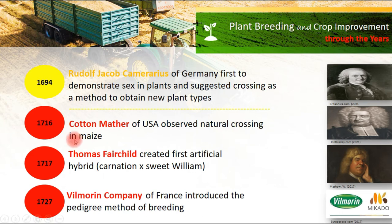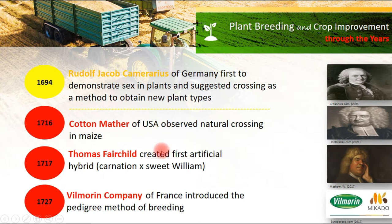Cotton Mather in 1716, from the USA, observed natural crossing in maize. Also, Thomas Fairchild in 1717 created the first artificial hybrid — a cross between Carnation and Sweet William.